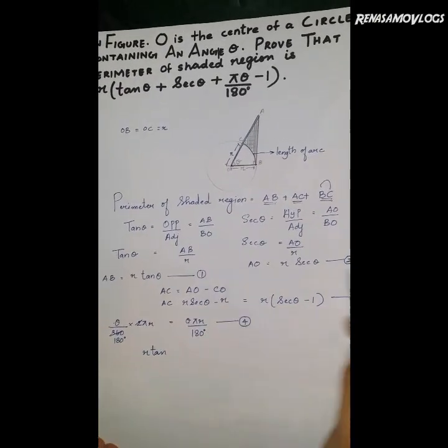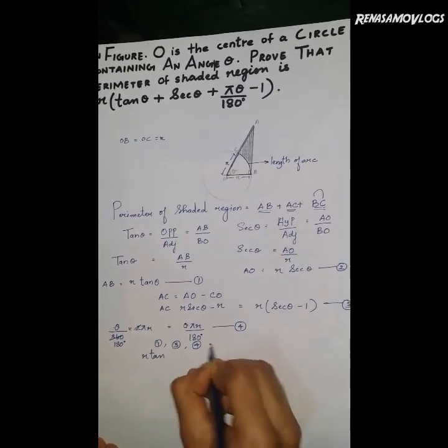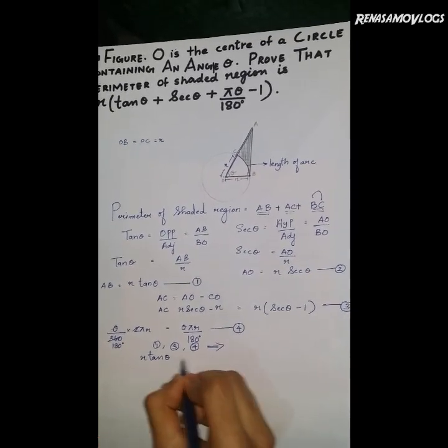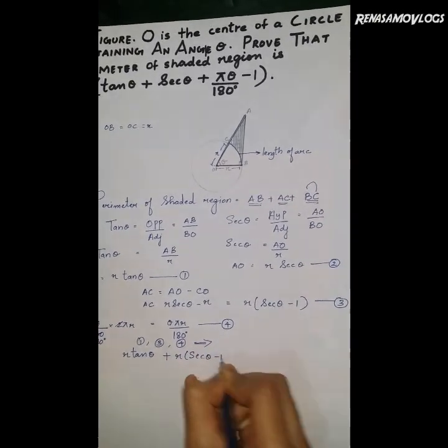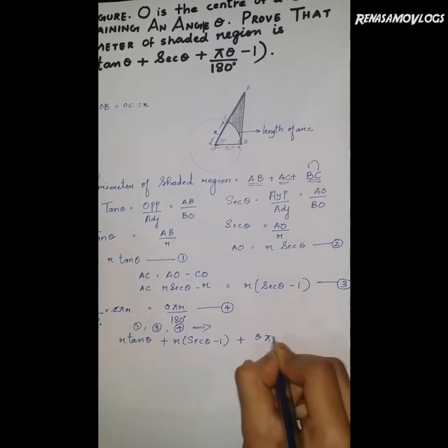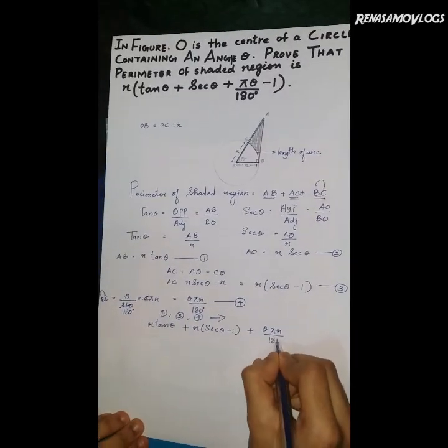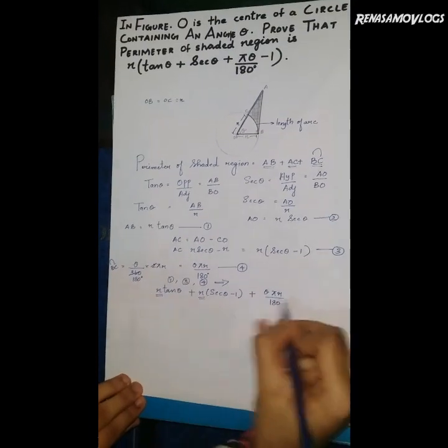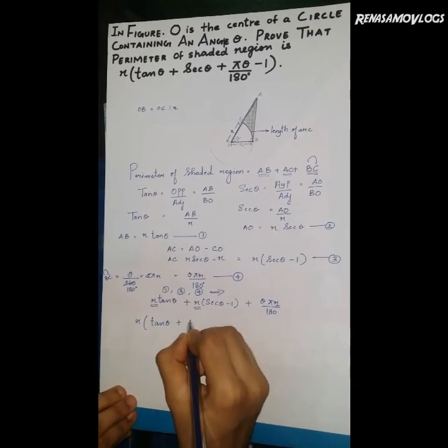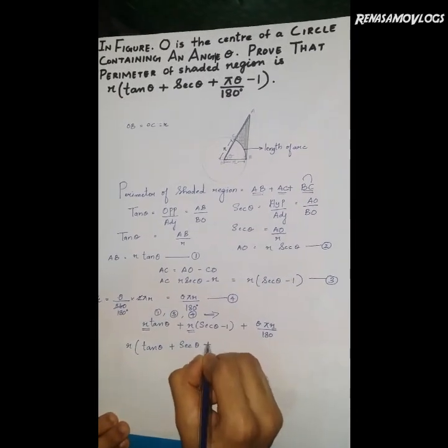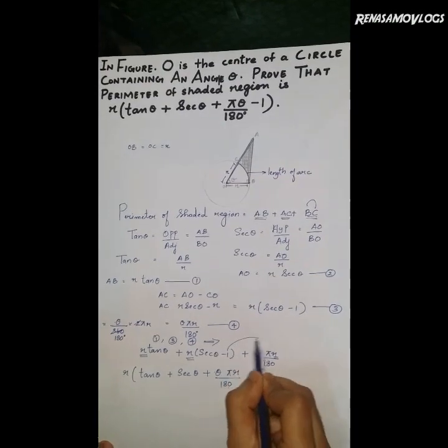So from steps 1, 3, and 4: R tan theta plus R times sec theta minus 1, plus the length of the arc BC. In all these, R is common in all three terms, so take R out: tan theta plus sec theta plus pi theta by 180, and minus 1 will go at the last.